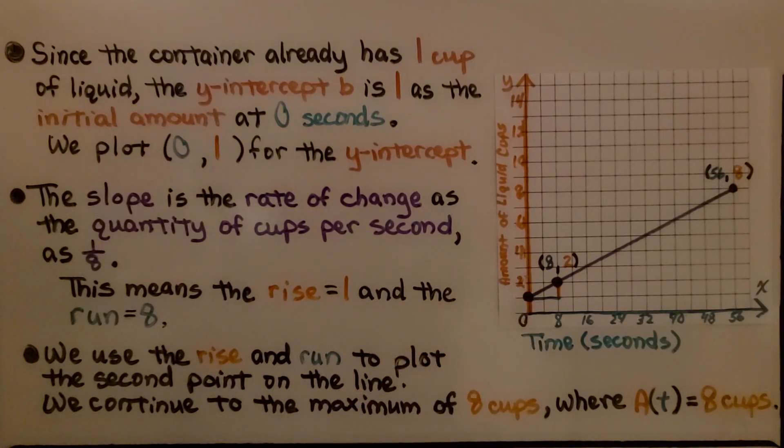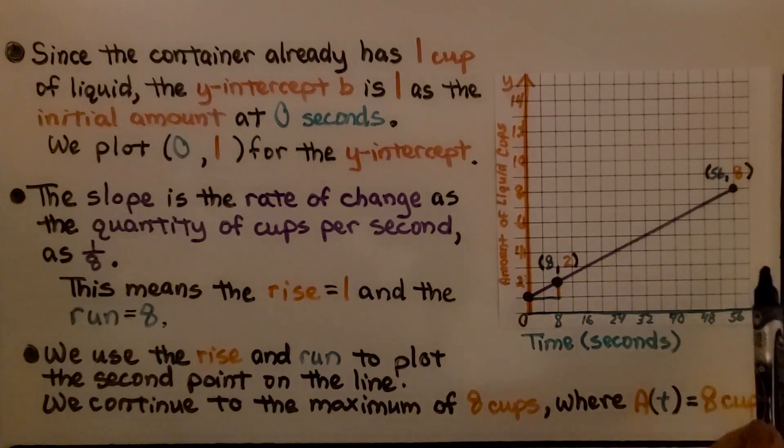The slope is the rate of change as the quantity of cups per second as 1/8th. This means the rise equals 1 and the run equals 8. We use the rise and run to plot the second point on the line. We continue to the maximum of 8 cups, where A(t) equals 8 cups.